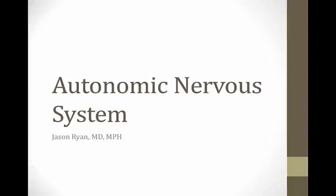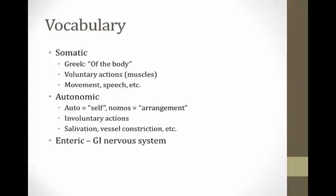Hi, everybody. Welcome to our module on the autonomic nervous system. Before we get started, let's review a little bit of vocabulary. There are essentially three nervous systems inside the body. The first one is called the somatic system, a Greek word which means 'of the body.' This is a nervous system that controls our voluntary actions like our muscles — when you move, speak, or pick something up with your hands.